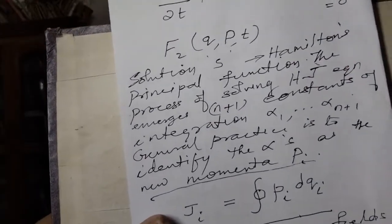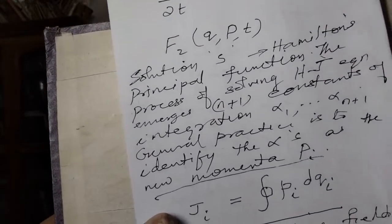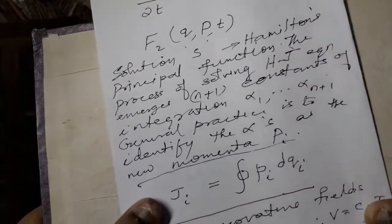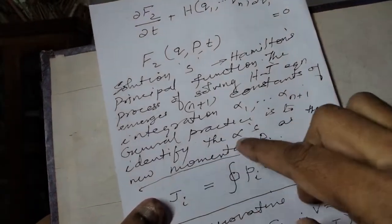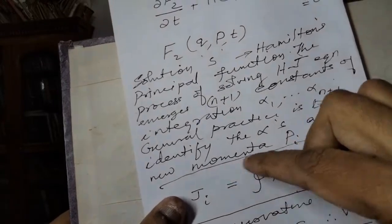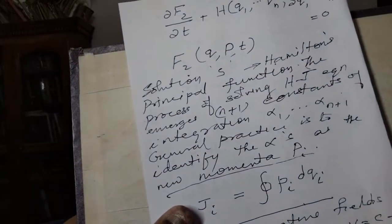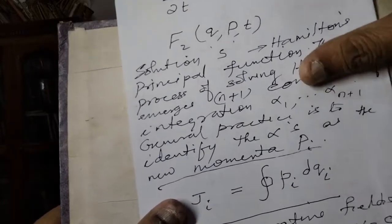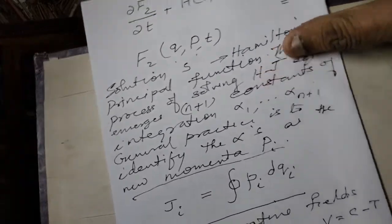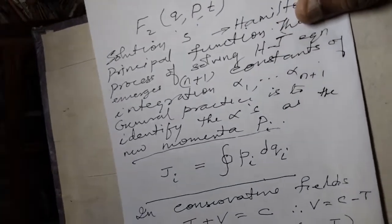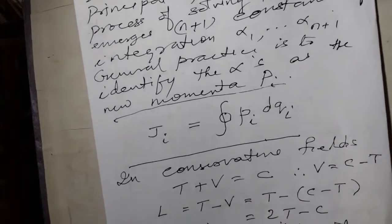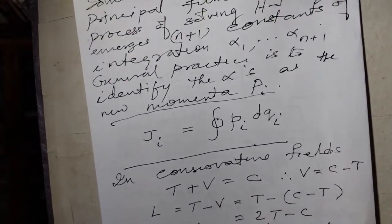Canonical transformation, canonical variables. The set of constants is called alphas.